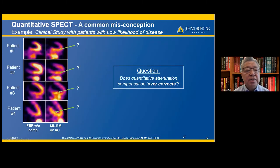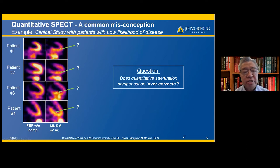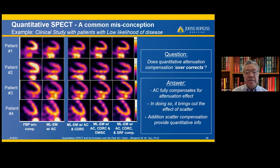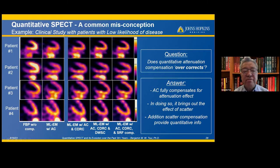There is a common misconception about quantitative SPECT. A clinical study showed that with maximum likelihood EM algorithm with attenuation correction there are artifacts in the inferior wall of the myocardium, leading to the question of whether quantitative attenuation compensation over-corrects. However, when adding detector response correction and scatter correction, the artifact disappears, showing that attenuation correction fully compensates but brings out scatter effects. This misconception delayed the acceptance of quantitative SPECT in the clinic for a number of years.